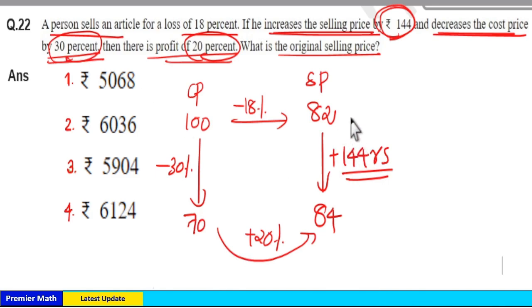in question, it is given that difference between sell price, initial sell price and current sell price is Rs. 144. But here in ratio, 82 and 84 difference is two parts. So, two parts is equal to Rs. 144.